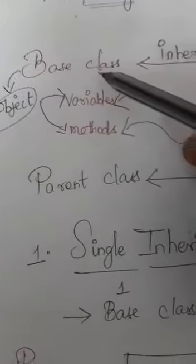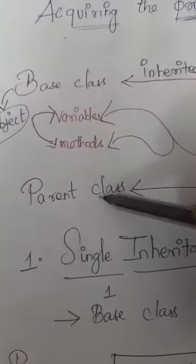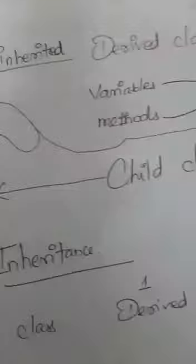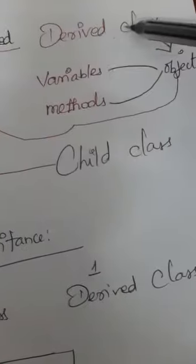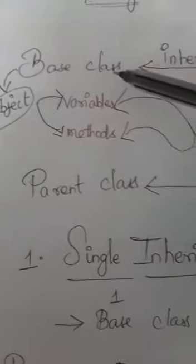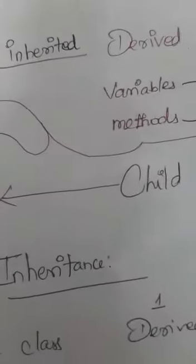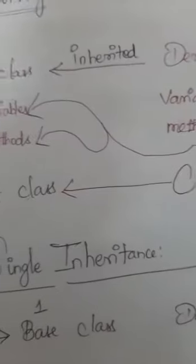A base class is called a parent class, and a derived class is called a child class.